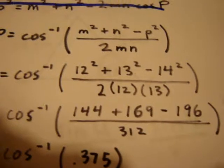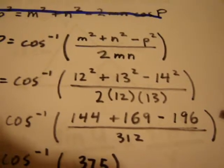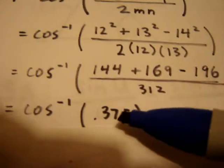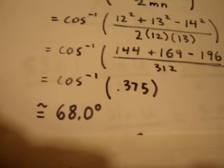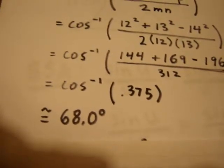Which is the cos inverse of 144 plus 169 minus 196 all over 312. This value in the bracket is equal to 0.375. The cos inverse of 0.375 is approximately 68.0 degrees. Since that's the value that I was looking for, I can say that X is approximately equal to 68.0 degrees.